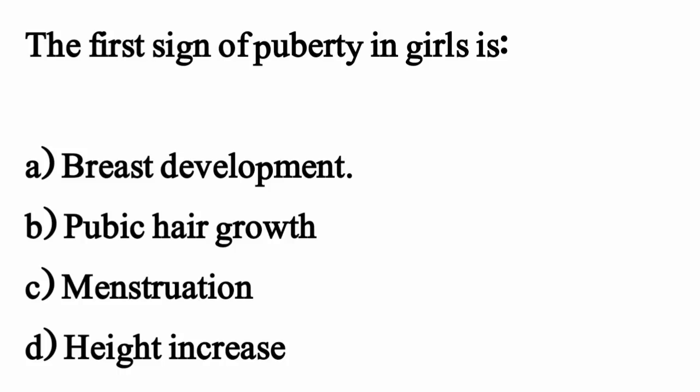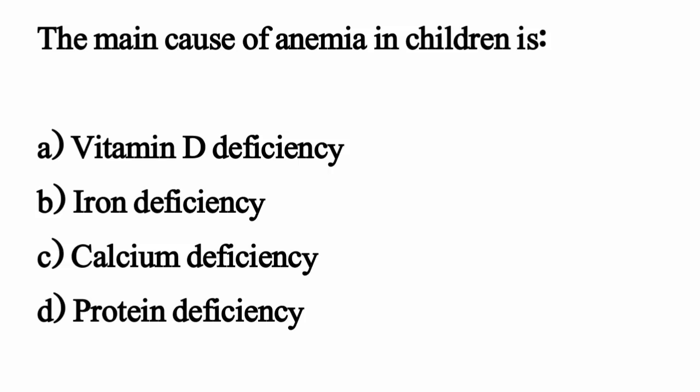The first sign of puberty in girls is? The correct option is option A: Breast development. The main cause of anemia in children is?